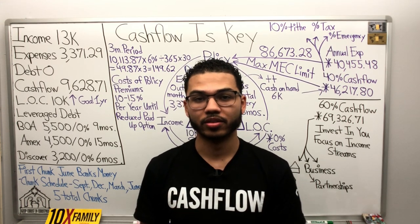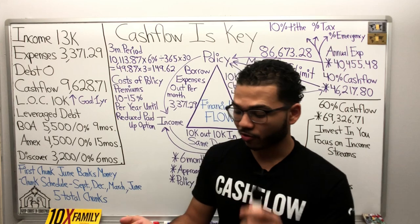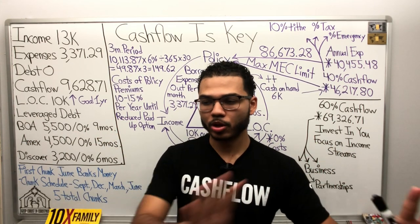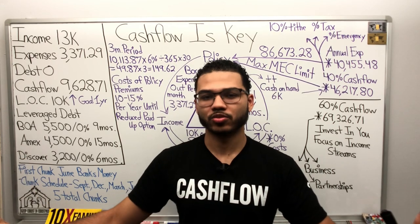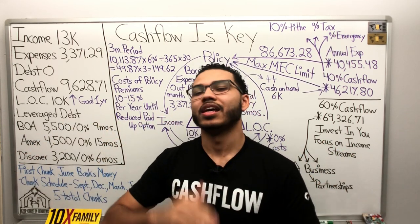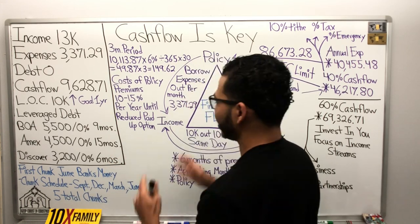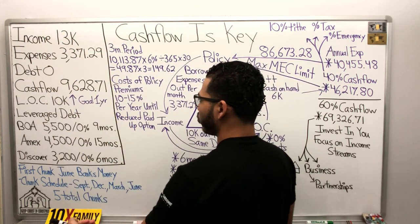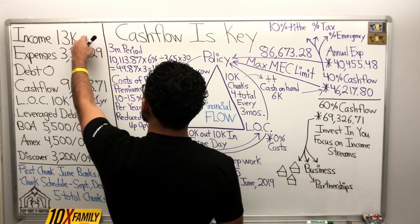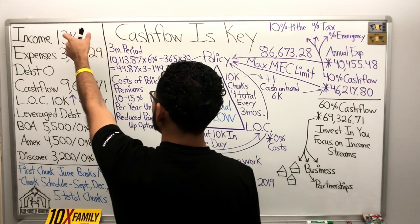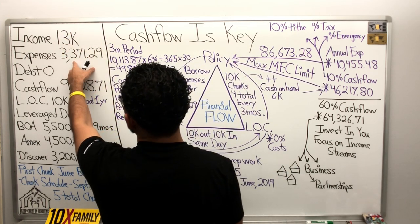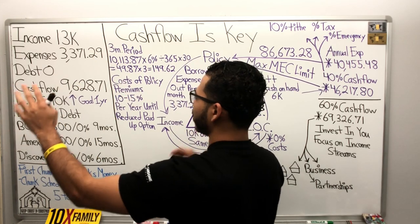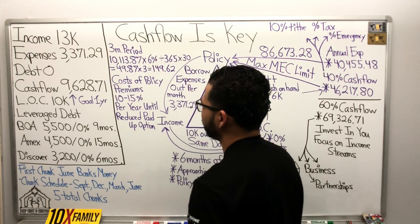We're going to be focusing on cash flow. I'm going to map out the plan, show you how I create the plan to cash flow, what it looks like, and then I'll make another video where we actually put the plan in action. On the board here, it's April 2019. The amount of revenue I brought in for the month of April is $13,000. Here are my expenses: $3,371.29. Here is debt: zero — we're debt-free. Cash flow is $9,628.71.